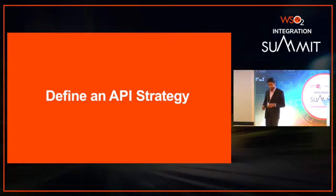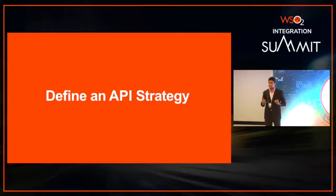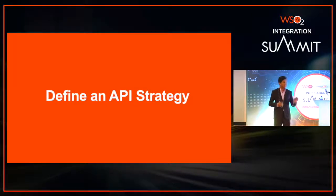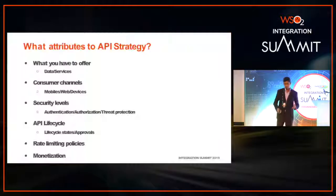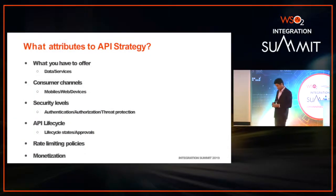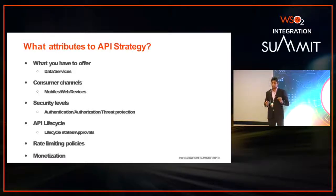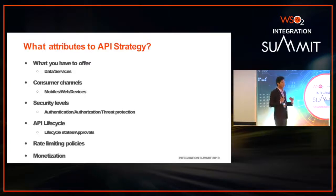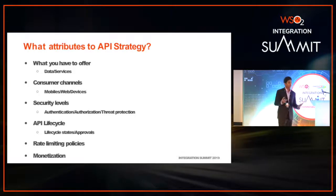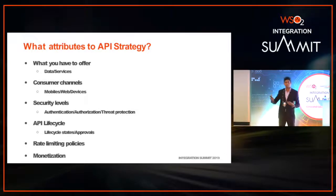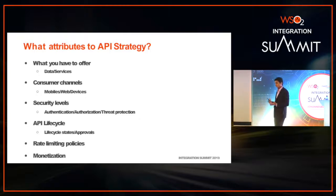To start with, you need to define an API management strategy that suits your company and business. When you decide, there are multiple aspects to consider. First, you need to figure out what capabilities and services you have to offer — it could be some kind of service or some kind of data that you can serve as a service.